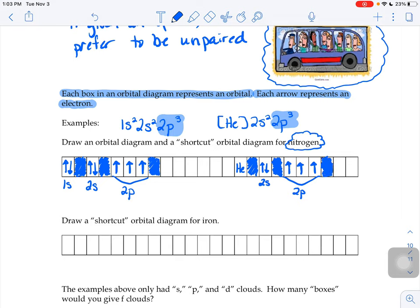So the shortcut way and the original way were not much of an improvement there, right? But nitrogen's pretty early on in the periodic table.